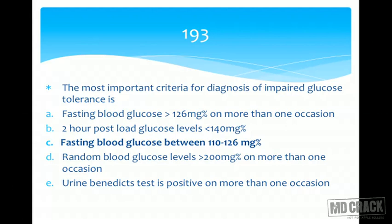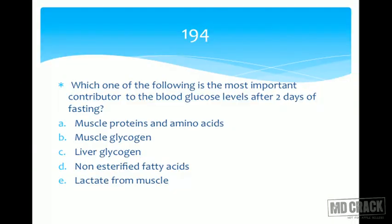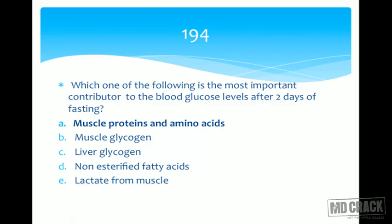Next question: the most important contributor to blood glucose levels after two days of fasting. They are looking at nearly 48 hours post-fasting. Most important contributor will be muscle proteins and amino acids. Immediately following fasting, liver glycogen provides blood glucose via glycogenolysis. Then gluconeogenesis takes over, and its substrate must come from somewhere — not adequately from adipose tissue.